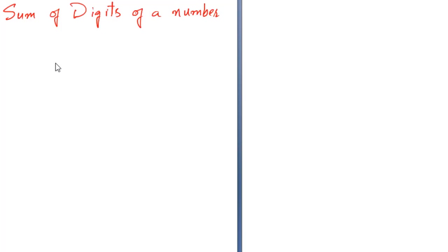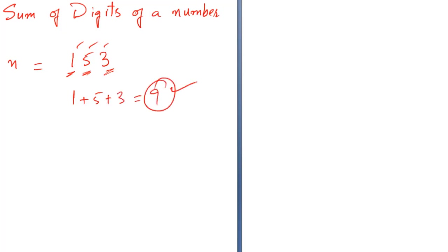Welcome back. In this tutorial, I am going to draw a flowchart that will find the sum of digits of a number. Suppose I have a number 153. I am going to find the sum of its digits: 1 plus 5 plus 3, which is equal to 9. The input of my flowchart is 153 and the output is 9. So I will draw a flowchart for this.